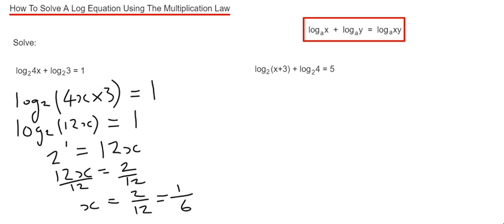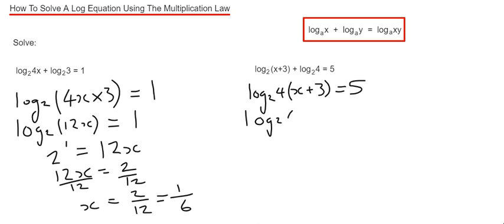Let's move on to example 2. This time we've got log base 2 of (x plus 3) plus log base 2 of 4 equals 5. So again, if we combine the two logs together on the left hand side using our multiplication law, let's put the 4 first in front of the bracket. We can multiply out the bracket as well, so we get 4x plus 12.